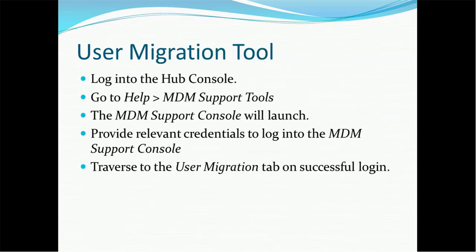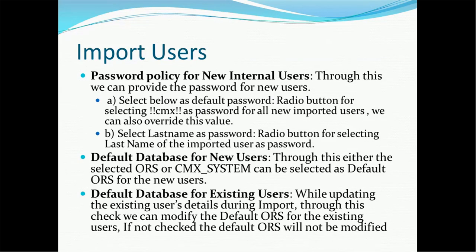Using the tool is very simple. Go to the MDM hub, then in the Help section you will find MDM Support Tools, and launch the application from there. When using the user migration tool, there are two major activities involved: first is exporting users — for example, when migrating users from development to QA, you first export users from the development environment — and second is importing users into the QA environment.